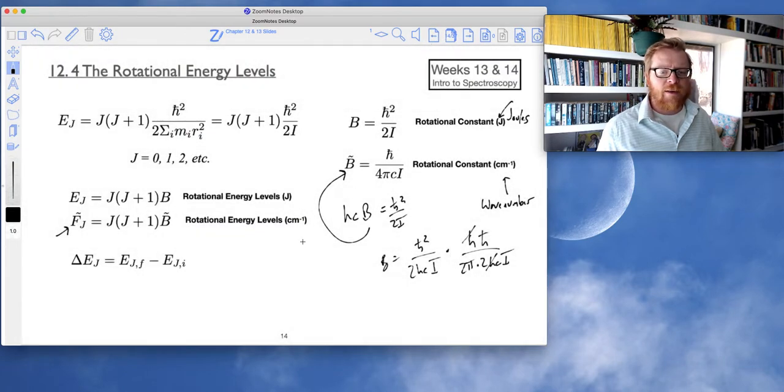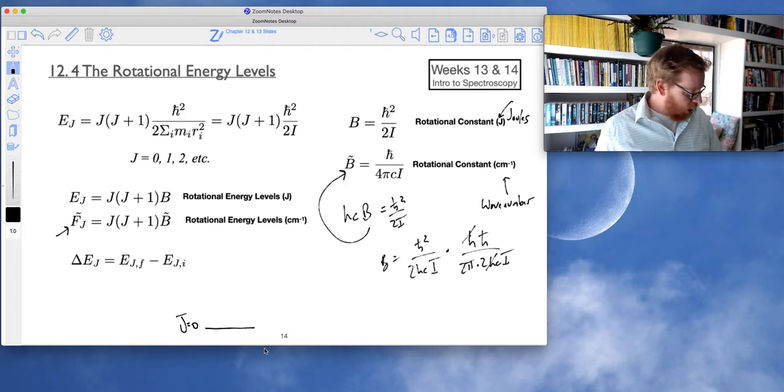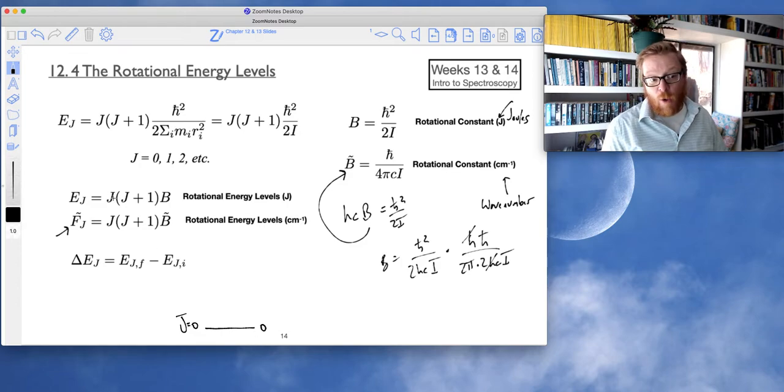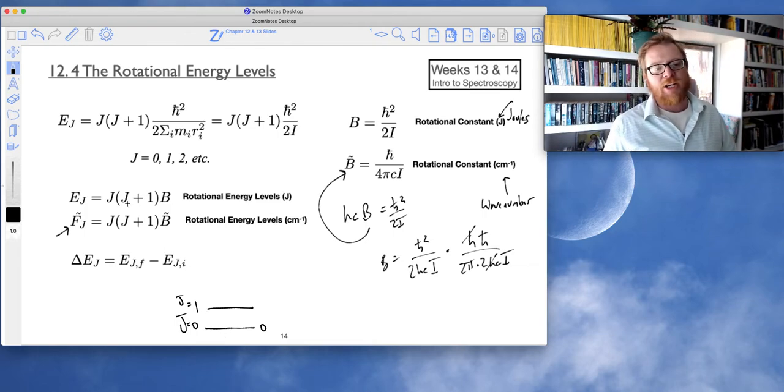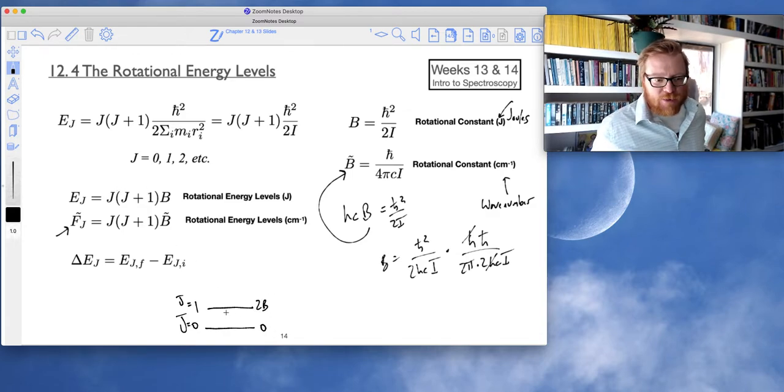And so that difference in energy levels will be given by ej final minus ej initial. And so let me see what I have coming up next. So let's keep walking through this. And so I just want to show you an example of this. So if I say j equals 0, that's going to be my ground state. And I know that that's going to have an energy of 0 if I apply that j0 through this term. So now what about the next level? Well, that's going to be a j equals 1.